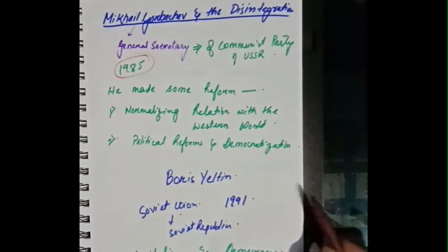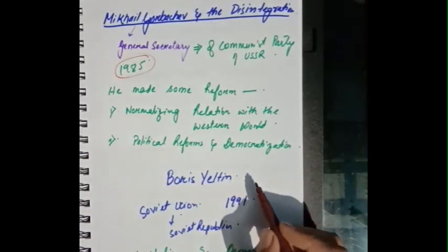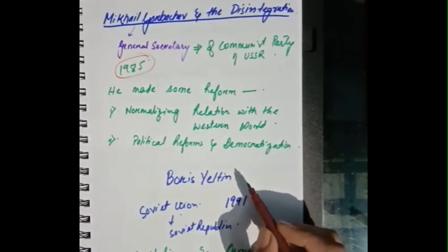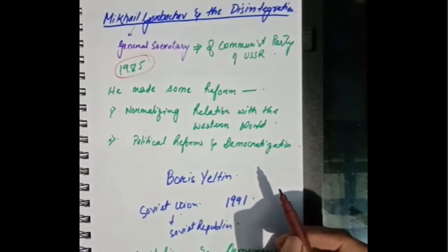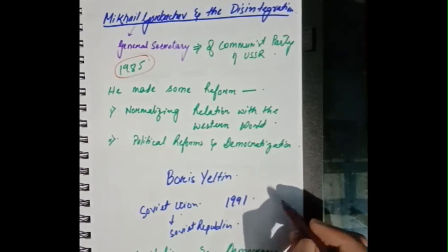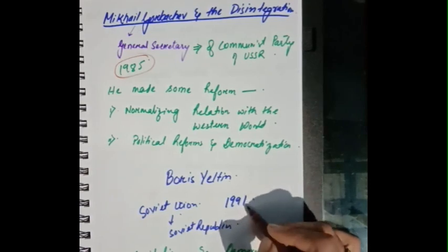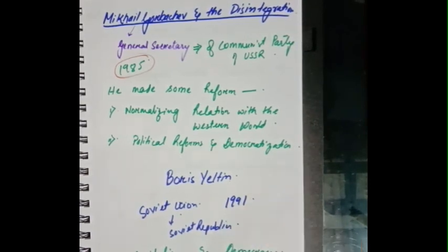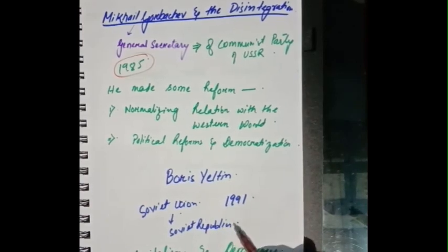At that time, Boris Yeltsin emerged as a hero among the people and promised to create a new system that would match the living standards the people desired. He also won the presidential election of Russia in 1991 and converted the Soviet Union into Soviet Republics.